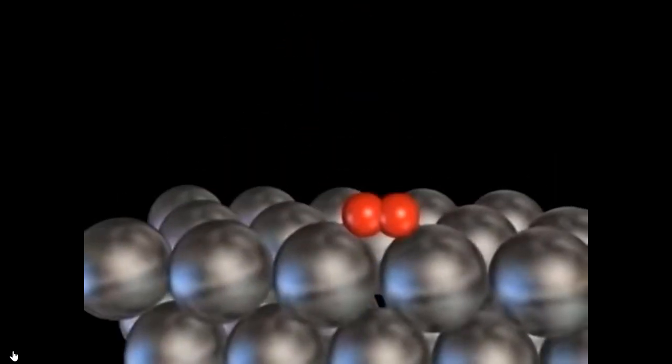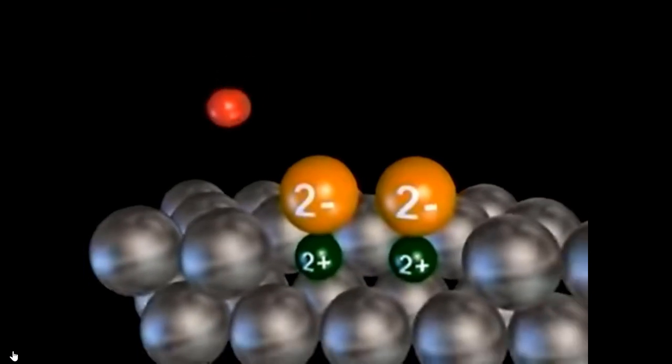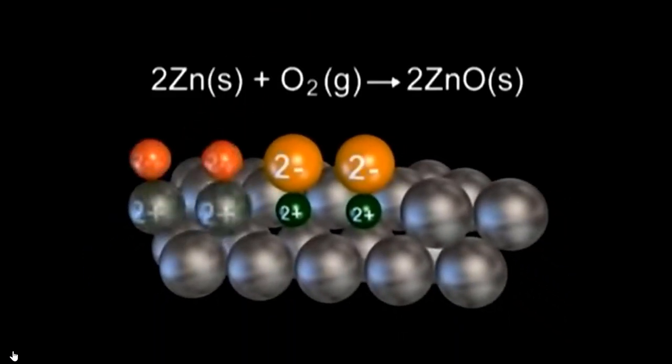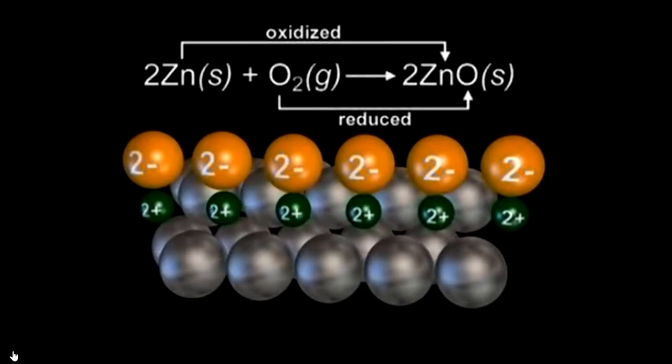When zinc metal is exposed to oxygen at high temperature, it reacts to form zinc oxide. Electrons are transferred from zinc to oxygen, creating oxide and zinc ions. We say that zinc has been oxidized. The oxidation of zinc by molecular oxygen is an example of an oxidation reduction reaction. More generally, oxidation corresponds to a loss of electrons. Zinc is oxidized because it loses electrons to the oxygen. On the other hand, oxygen is said to be reduced because it gains electrons.